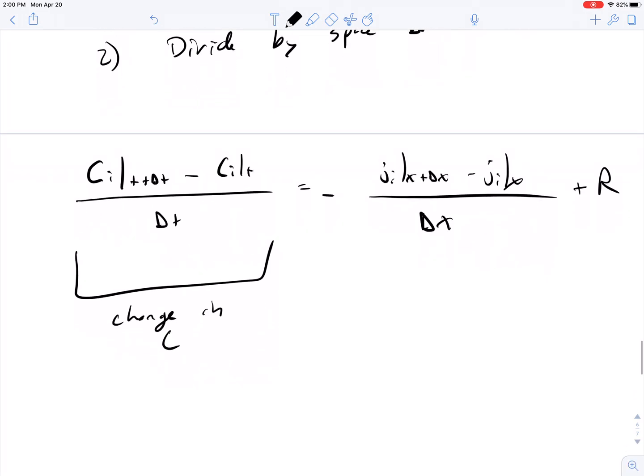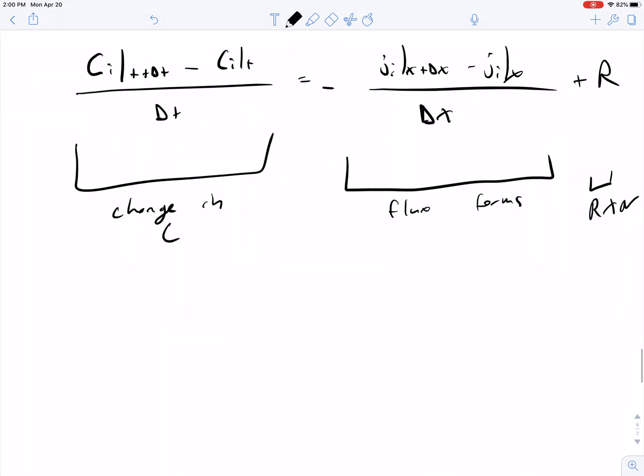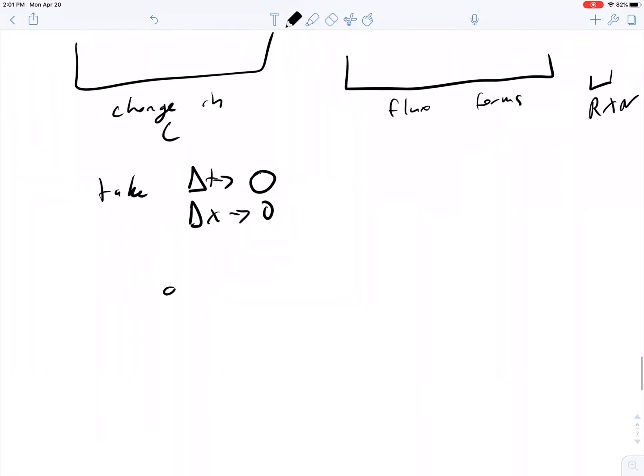So now we have a change in concentration instead of total amount of material, and this is equal to the flux terms and the reaction terms. So what do you do? Of course, you take delta T goes to zero, take delta X goes to zero, and you take these things to the limit one more time to get your final partial differential equation for a change in concentration in the material.